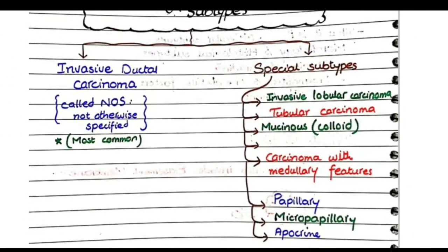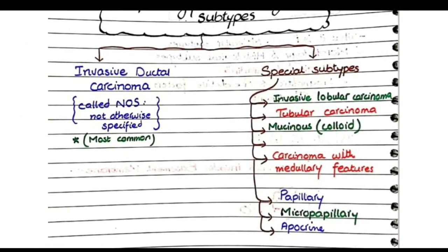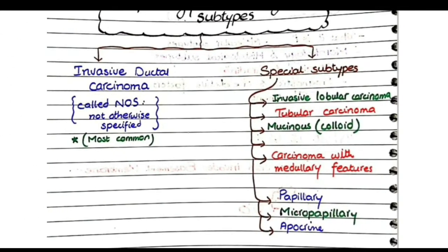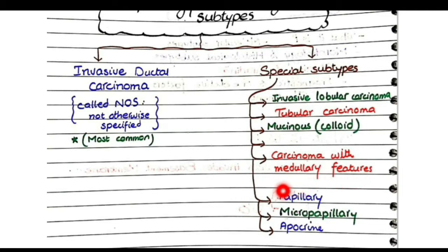These special subtypes are special in their morphological architecture. They include invasive lobular carcinoma, tubular carcinoma, mucinous carcinoma, carcinoma with medullary features, papillary, micropapillary, and apocrine carcinomas.